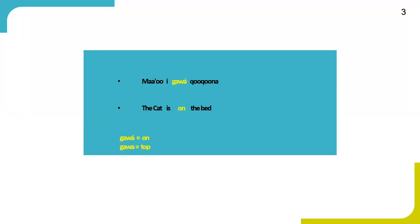My first example means 'the cat is on the bed.' Here, as I highlighted in red and yellow, the highlighted word means 'on' and it is a location noun.